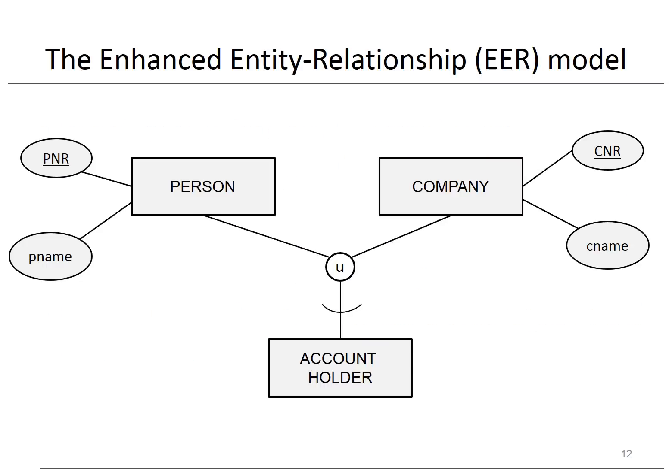Here you can see the superclasses person and company which have been categorized into an account holder subclass. In other words, the account holder entities are a subset of the union of the person and company entities. If the categorization were total, this implies that all person and company entities are also account holders, and we could also model this using a specialization with account holder as the superclass and person and company as the subclasses. If the categorization is partial, then this cannot be modeled as a specialization. Selective inheritance implies that some account holders inherit their attribute types and relationship types from person, whereas others inherit them from company.